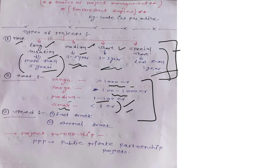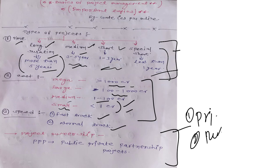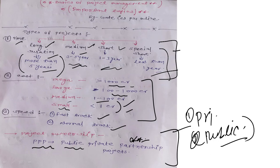According to cost, we can make classification of projects. According to speed, fast track projects or normal track projects — fast track means speed is more, normal track means normal speed. Now one important topic: project ownership. There are private projects, public projects — meaning government projects where the government gives projects for public benefit — and a third type which is the current trend: PPP modules.